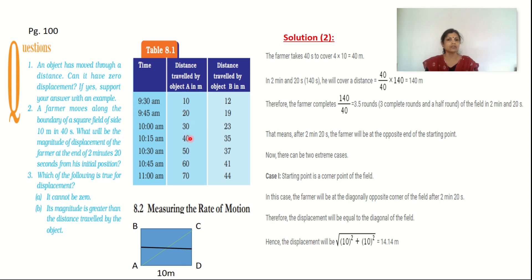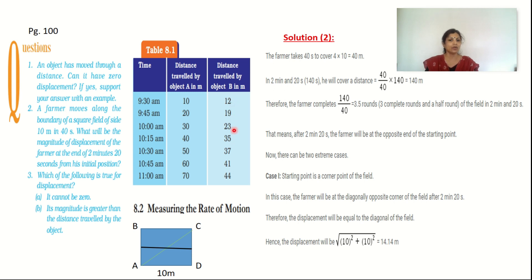If you see the second column of distance, the change in distance is not equal with time — it is unequal. The first change is 7 meters, and the next is more than that. When there is unequal change in distance in equal intervals of time, we call that motion non-uniform motion. So the table gives you an idea about uniform and non-uniform motion.